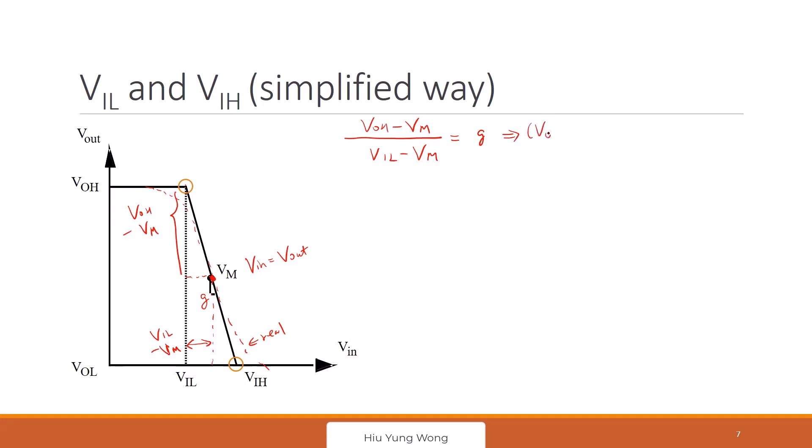So I do some math. Multiply the denominator to the right and then collect the term for Vm. I mean, yeah, sorry, VIL. This is Vm plus G times VIL equals VIL. So VIL times G is just equal to Vm plus Voh minus Vm divided by G. Is this okay?